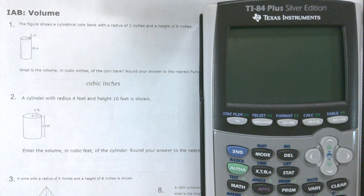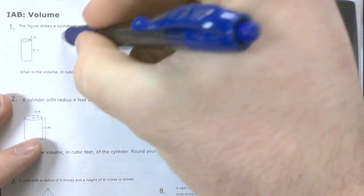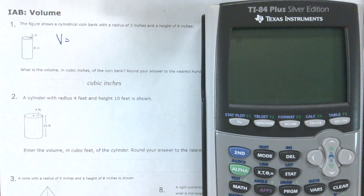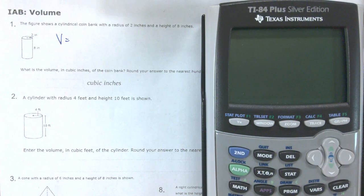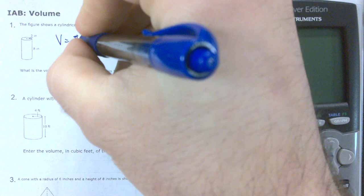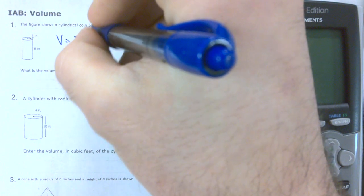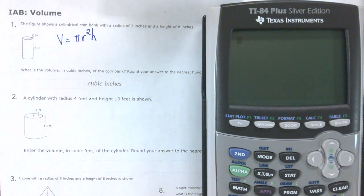Alright, so the volume of a cylinder, which is what 90% of these questions are asking you to find, is V equals what? What's my formula? Can someone help me out here? V equals pi times radius squared times h.